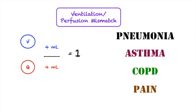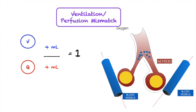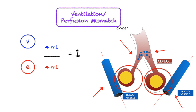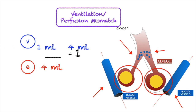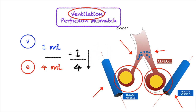Let's take pneumonia as an example. Pneumonia causes secretions to pool within the alveoli, resulting in a decrease in the amount of oxygen going inside. However, the amount of blood perfusing the lungs remains unchanged. Going back to the ratio, if we change V to 1 mL while Q remains the same, this gives us a ratio of less than 1 — meaning a ventilation problem like pneumonia causes a low VQ mismatch.